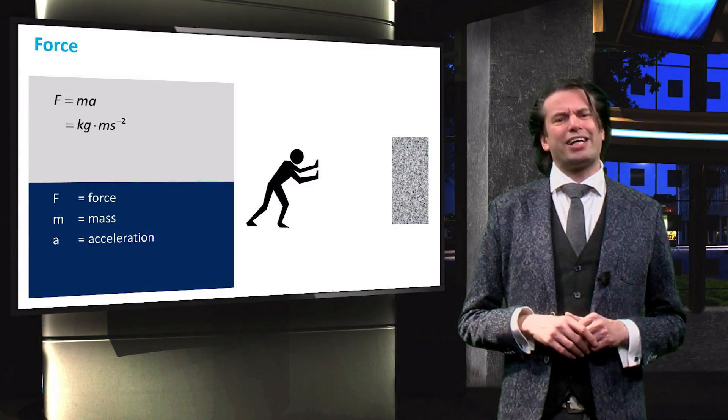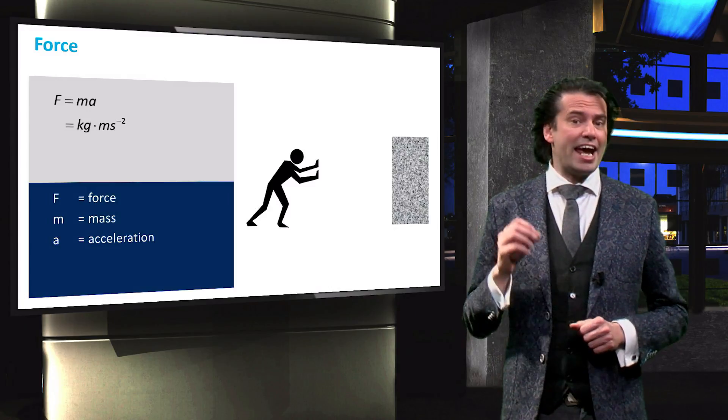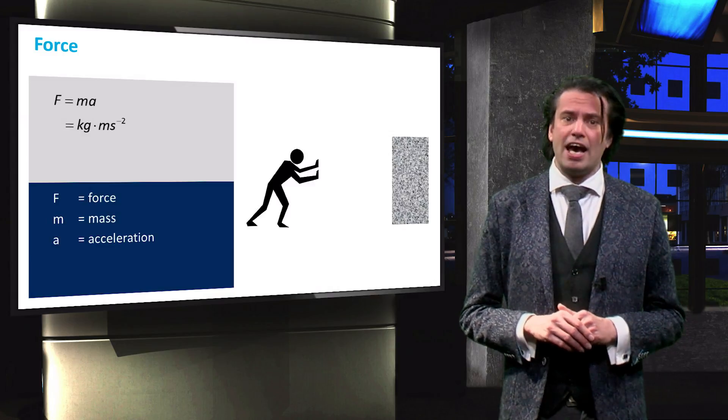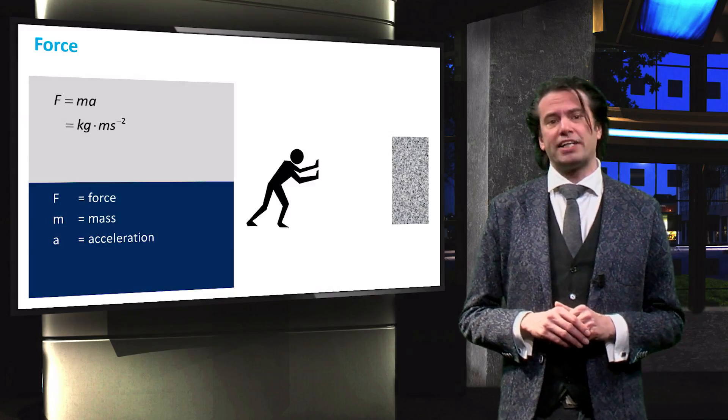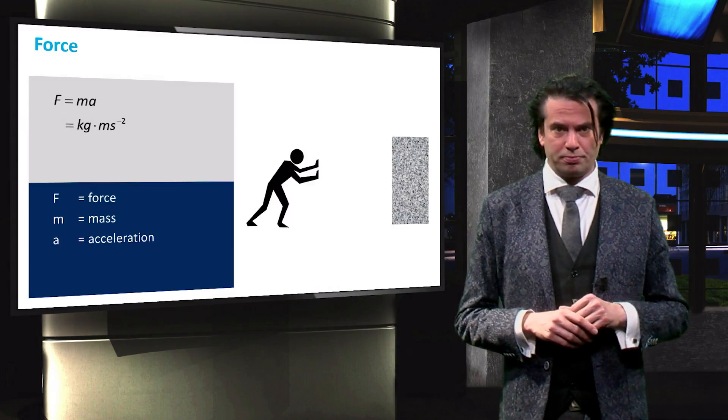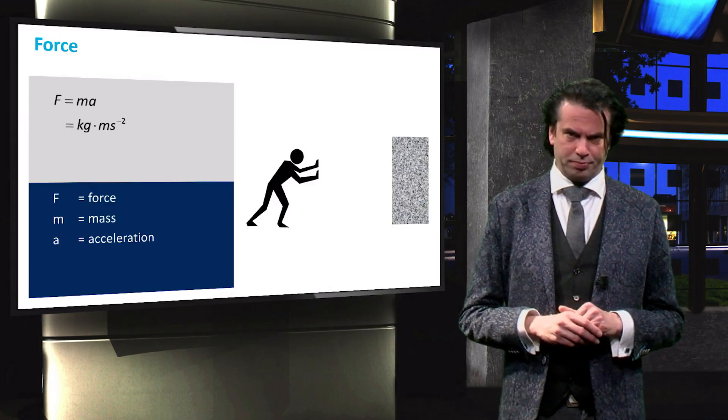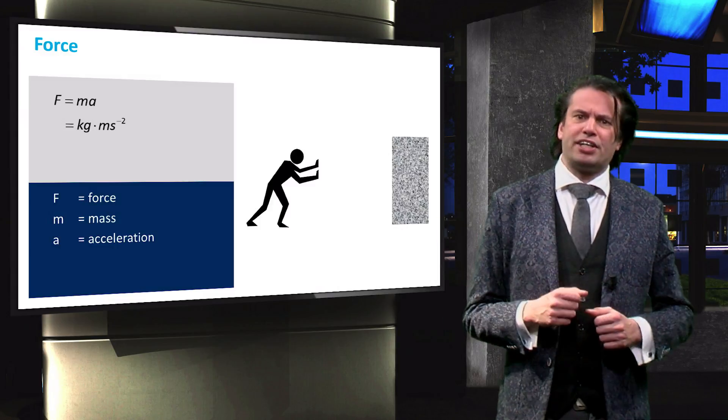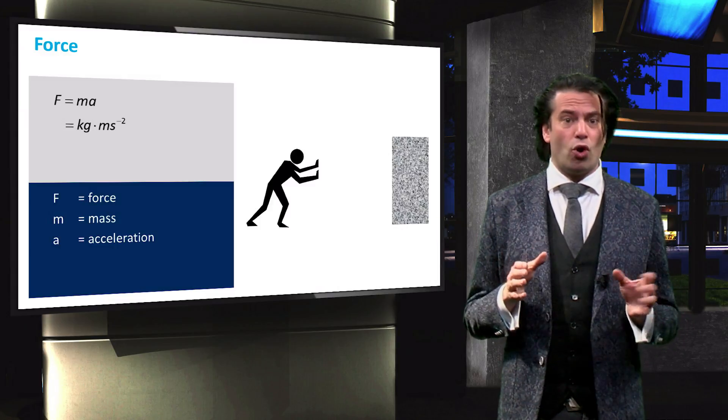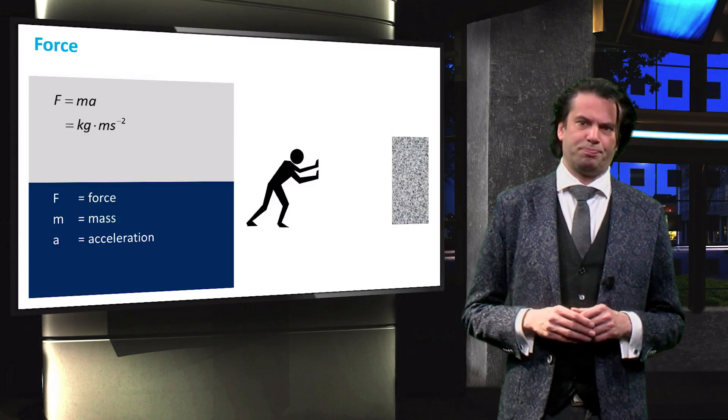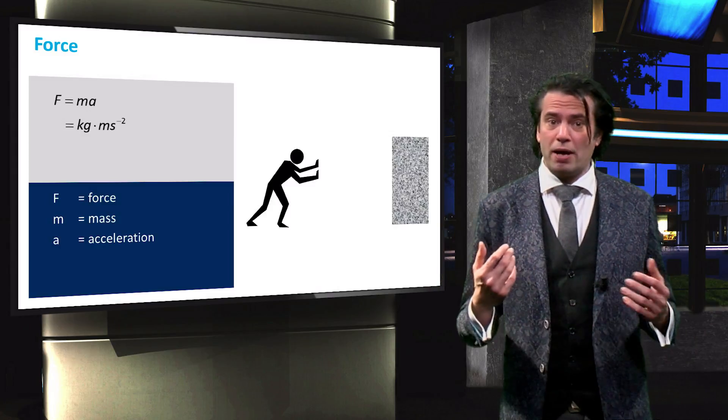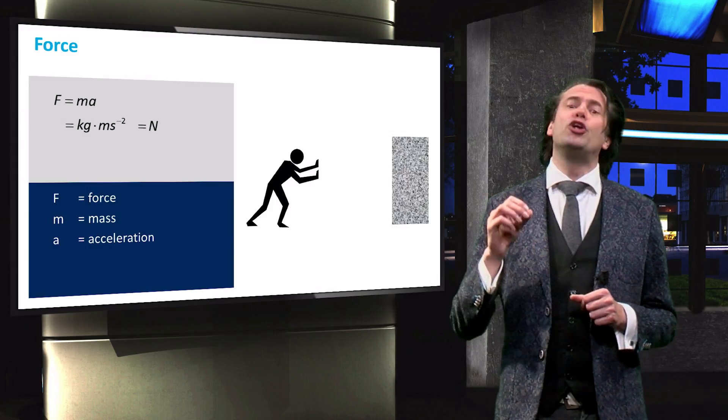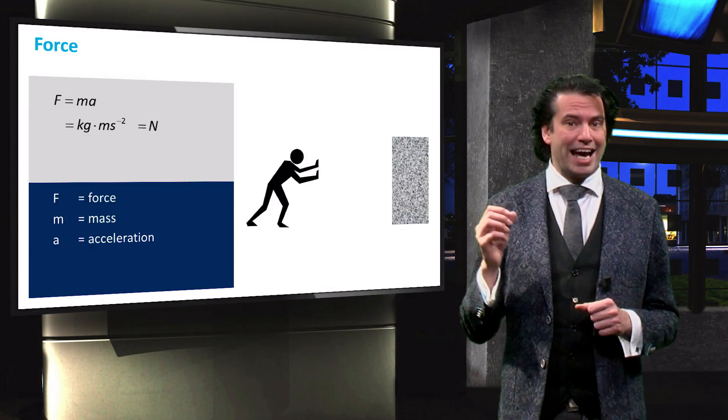According to Newton's second law, the acceleration A depends on the magnitude of the exerted force F and the mass M of the object that undergoes the acceleration, as shown in this equation. We can gather from the figure that the force and the acceleration are vectors or directional quantities. The units of force are kilogram times meter per second squared, which is known as a newton, denoted by N.